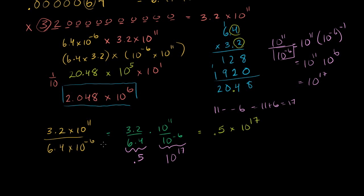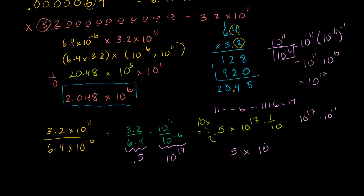That's the correct answer, but to put it in proper scientific notation, we want something greater than 1 in front. Multiply 0.5 by 10 to get 5, and divide 10 to the 17th by 10 — that's 10 to the 16th. So the final answer in scientific notation is 5 times 10 to the 16th. Hopefully these examples have filled in all the gaps dealing with scientific notation. Feel free to write a comment or send an email if something wasn't covered.